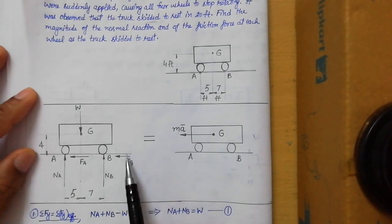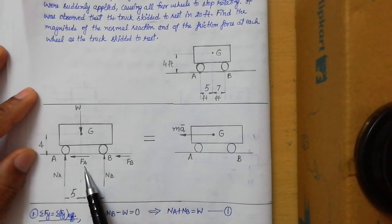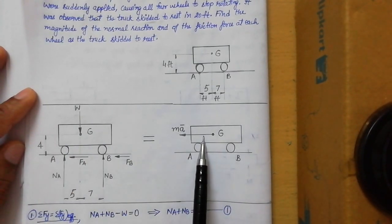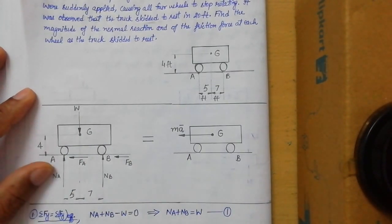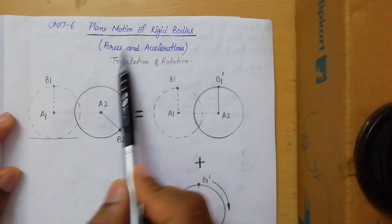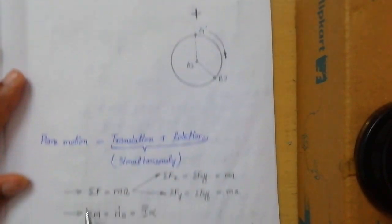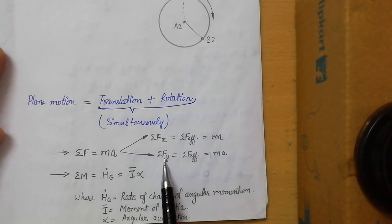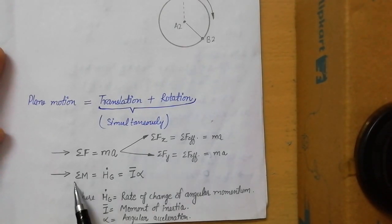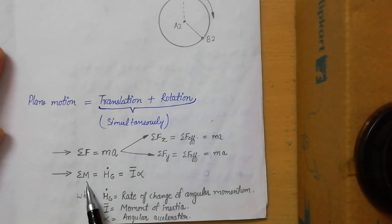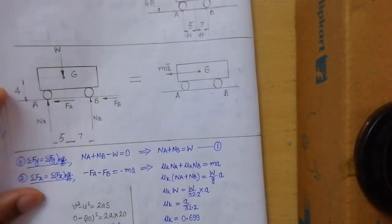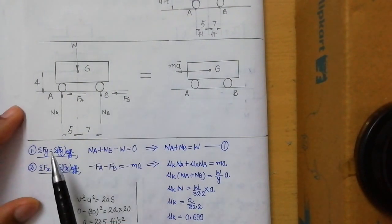This gives us ΣF = ma. As covered in the previous video on plane motion of rigid bodies, three equations are applicable: ΣFx = ΣFx(effective), ΣFy = ΣFy(effective), and ΣM = ΣM(effective). We will apply these equations one by one to this problem.